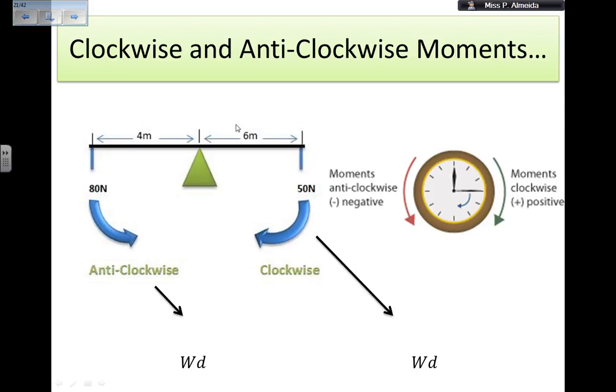Here I would have a clockwise moment of 6, the distance, times 50, the force. And on this side, I would have an anticlockwise moment of 4, the distance from the pivot, times 80, the force applied to it. Either if it's anticlockwise moment or clockwise moment, I still use the same formulas. The force, in this case, is represented as W, because it would be the weight of these objects, times the distance.